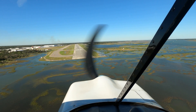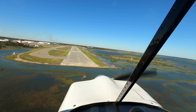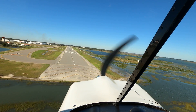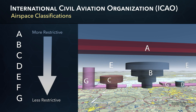For the VFR pilot flying in B, C, and D airspace, there are communication and/or clearance requirements. U.S. airspace conforms to the International Civil Aviation Organization system, called ICAO, which classifies airspace by the letters A through G, A being the most restrictive and G having the least constraints placed on it.